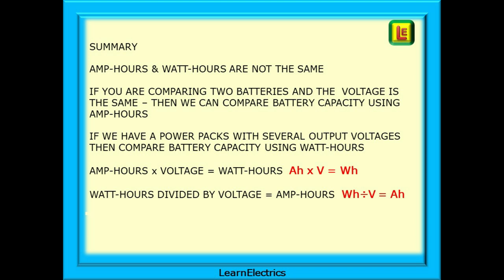A brief summary: amp hours and watt hours are not the same. If you are comparing two batteries and the voltage is the same, you can compare battery capacity using amp hours. If you have power packs with several output voltages, compare battery capacity using watt hours. Remember: amp hours multiplied by voltage gives watt hours, and watt hours divided by voltage gives amp hours. That is a brief introduction to amp hours and watt hours.